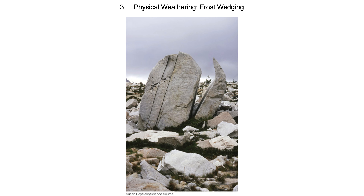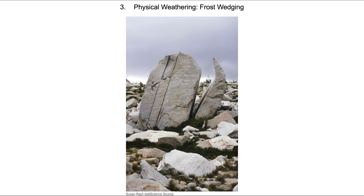Physical weathering can also result from frost wedging. Water trickles down into a fracture near the surface, and as that water transitions from liquid to solid — from water to ice — it expands by just over 9%. That 9% expansion is enough to eventually peel the rock apart. Notably, the part of an iceberg that sticks up above the water is also about 9% of the total volume.